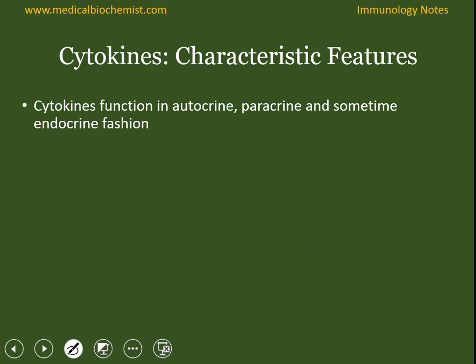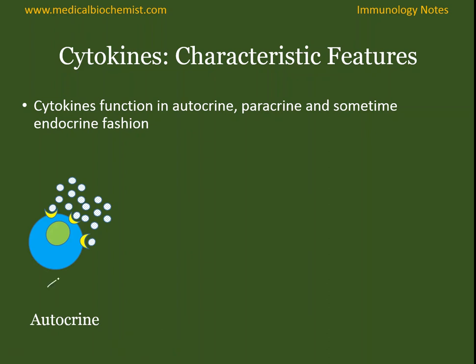How does this action occur? It can occur via autocrine, paracrine, or endocrine function. What is the autocrine function of cytokines? Let's say this is a T cell that is producing IL-2. The IL-2 produced by the T cell would bind to its IL-2 receptor present on the T cell itself, leading to the activation of T cells. This is known as autocrine because the secreting cell itself is the target cell.